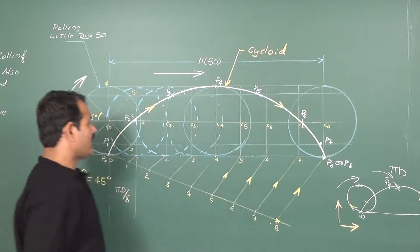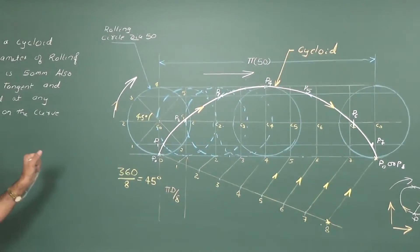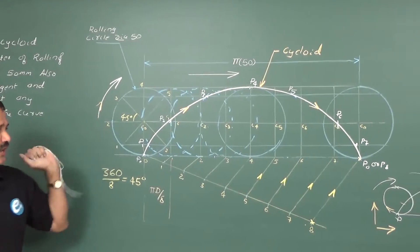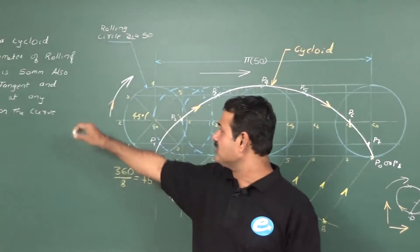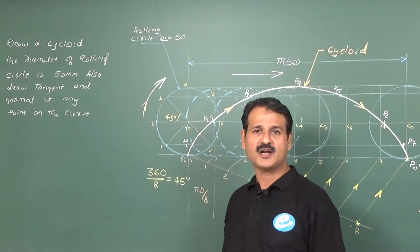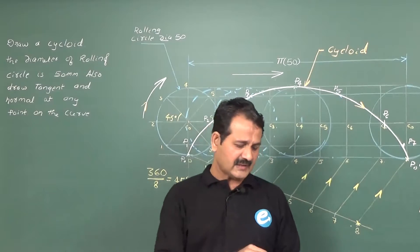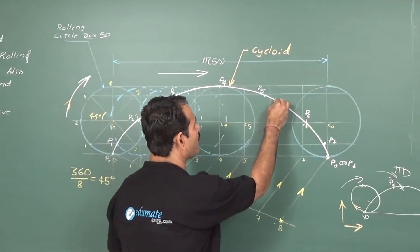What we have done is we have constructed according to our problem statement. We have constructed the required cycloid path. The further part of the problem is draw a tangent and normal to the curve at any convenient point. When I tell convenient point, let us take any point. So, let me take the point A somewhere over here.